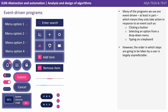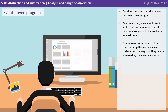However, the order in which these steps are going to be taken by a user is largely unpredictable. Consider a modern word processor or spreadsheet program. As a developer you can't possibly predict which buttons, menus, or specific functions are going to be used by which users or in which order. That means the various modules that make up this software are coded in such a way that they can be accessed by the user in any order.